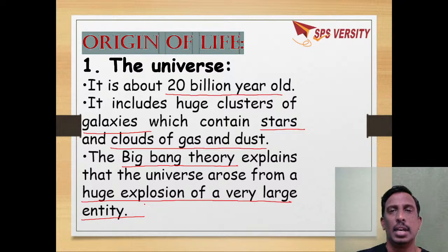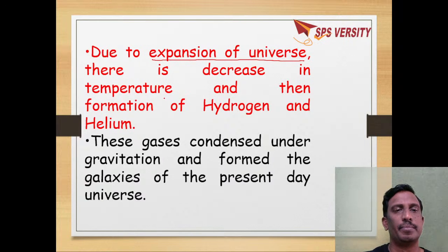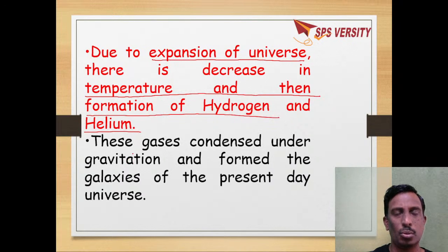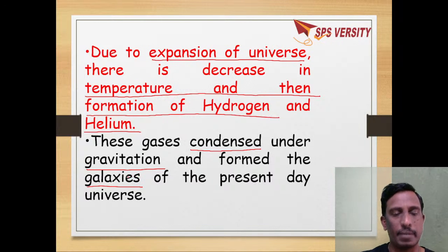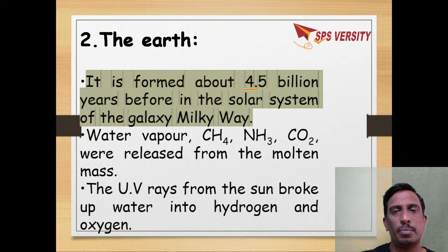A large explosion led to the origin of the universe. This universe is expanding, and there was a decrease in temperature followed by formation of hydrogen and later gases like helium. Whatever gases were formed, they underwent condensation due to gravitation and formed galaxies, which are present today in the universe. Earth is a part of the universe, and Earth's formation took place 4.5 billion years ago.